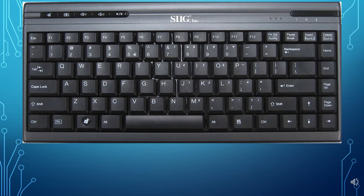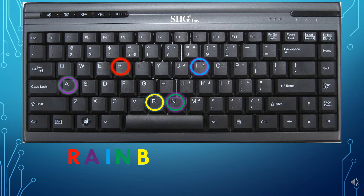Toh dhekho bachay, sab se pahle maine kiya: R, A, I, N, B, O, W. Toh yeh kya word ban gya? Rainbow. Isi tarah aap apne name ki keys ko press kar sakti ho, aur apna name likh sakti ho computer per.